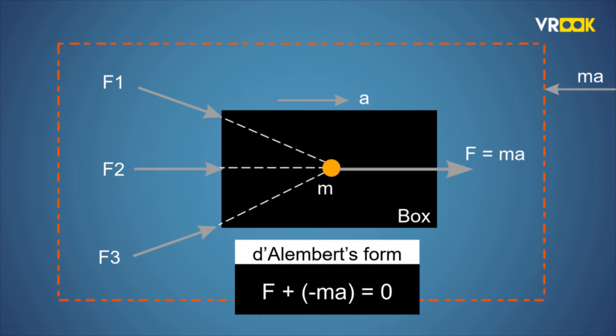The force minus ma is called the inertial force. In D'Alembert's form, the force F plus the negative of the mass m times acceleration a of the body is equal to zero. F plus minus ma is equal to zero.